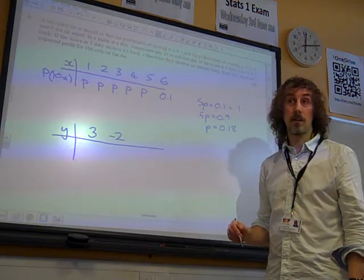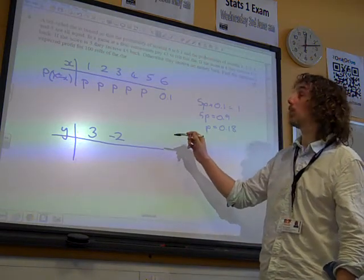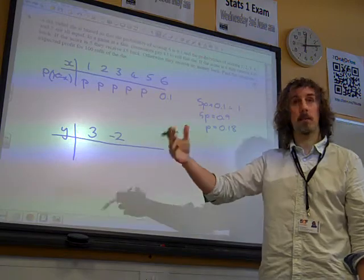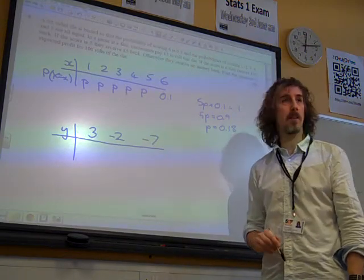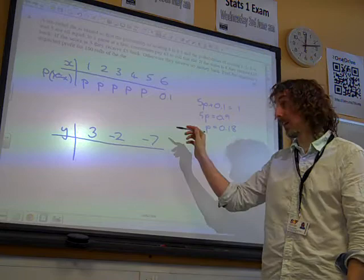If it landed on a 6, he lost £7. They paid him £3 and he gave back £10. So, they are his expected profits. They are his potential profits.